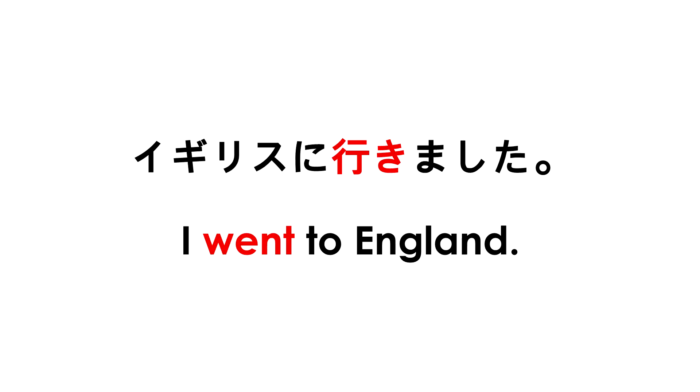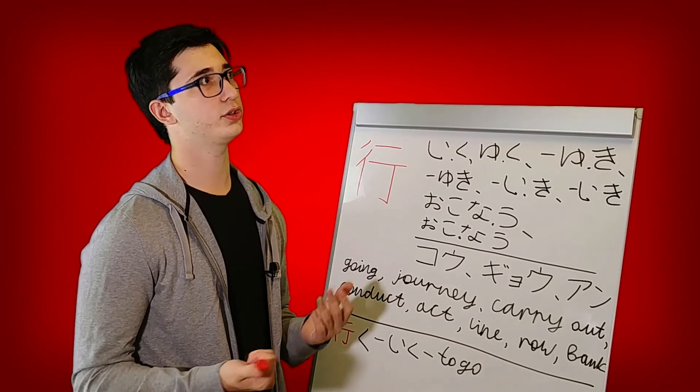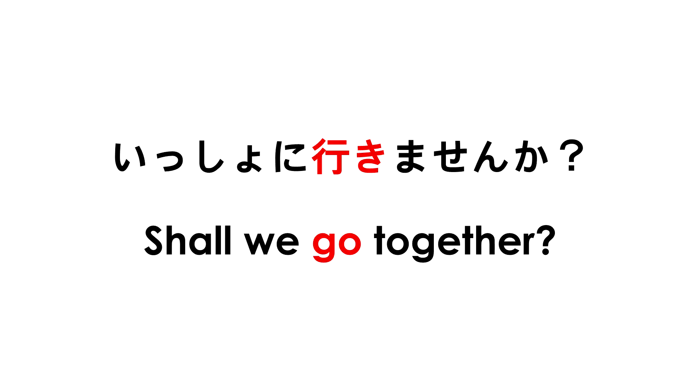So let me give you a couple example sentences for this word. You could have a sentence like igirisu ni ikimashita, which means I went to England. And then you can have a sentence like isho ni ikimasenka, which means shall we go together? Or if you translate it literally, it means won't we go together?